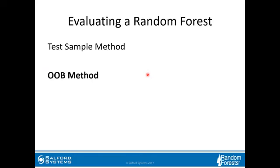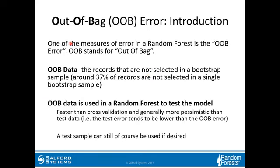The second method for evaluating random forests is the OOB method. OOB stands for out of bag. Out-of-bag data is the records that are not selected in a bootstrap sample — around 37% of records are not selected in a single bootstrap sample. The OOB data is used in a random forest to test the model because it's faster than cross-validation and tends to be more pessimistic than test data.